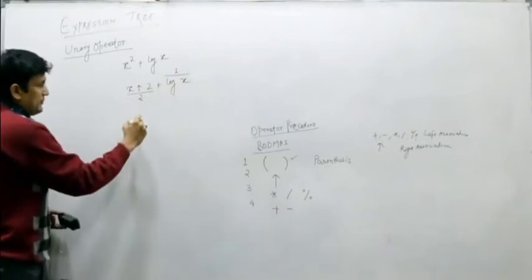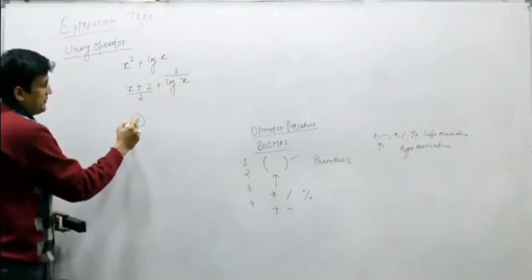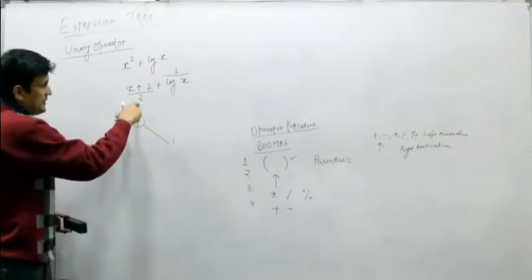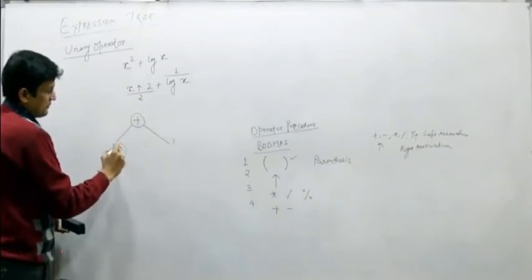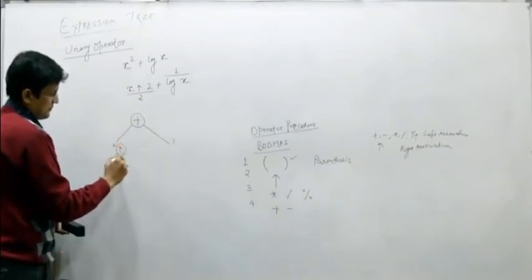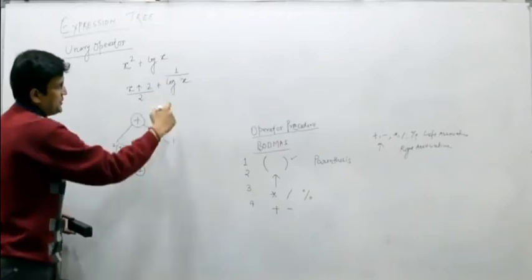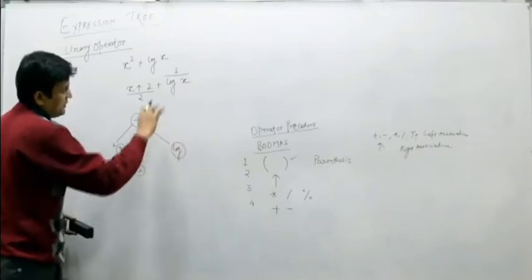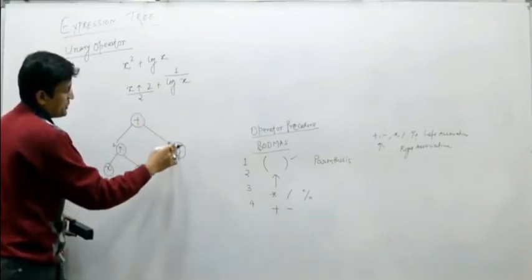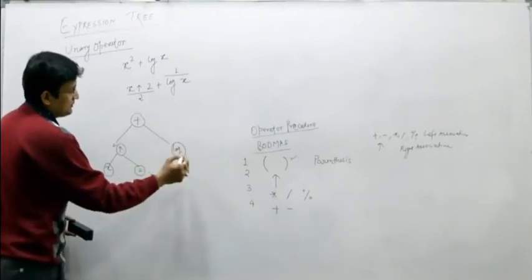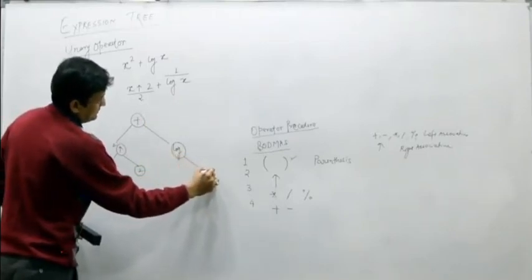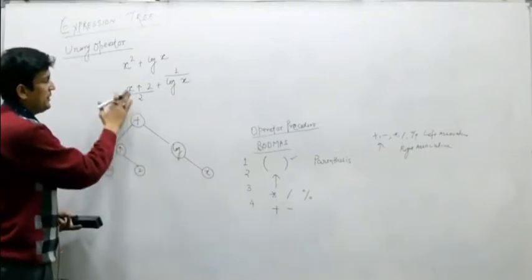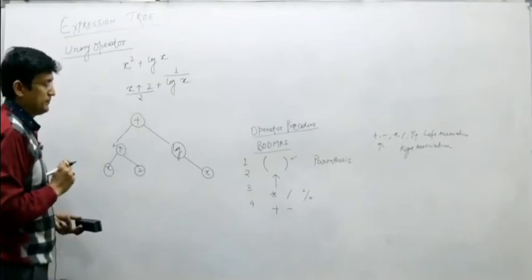The final expression is sub-expression 2 plus sub-expression 1. Building the tree: plus is the root node, sub-expression 2 on the left, and sub-expression 1 on the right. Expanding sub-expression 2 gives x raised to the power 2, and sub-expression 1 is log X. The in-order traversal of the sub-tree for log X results in log X, confirming the tree is correct.